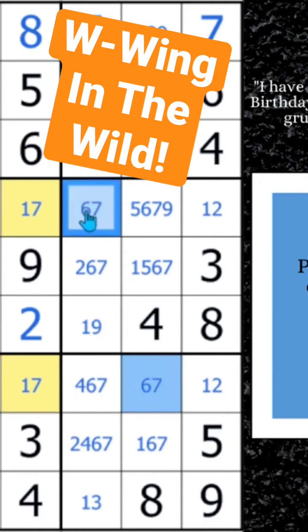So what does this mean? This means that either this cell here is a 6. If it's not a 6, it'd be a 7. Then this cell couldn't be a 7. This would have to be a 7. And then this cell would have to be a 6.